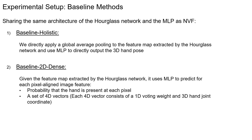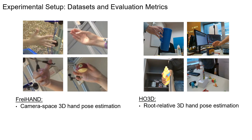To demonstrate the effectiveness of our proposed 3D dense regression scheme against classic holistic regression and 2D dense regression, we design two directly comparable baselines sharing the same architecture of the hourglass network and MLP as NVF. For the holistic baseline, we directly apply global average pooling to the feature map and use MLP to directly output the 3D hand pose. For the 2D dense baseline, given the feature map, MLP predicts for each pixel-aligned image feature the probability that the hand is present at each pixel and a set of 4D vectors, each consisting of a 1D voting weight and a 3D hand joint coordinate.